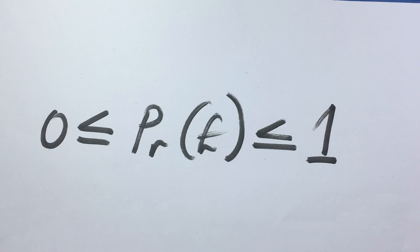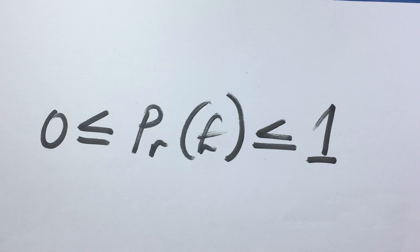In our first lesson on probability, we answered the question: what is the probability of an event? We did that from an empirical perspective and also gave some general definitions. In our second lesson on probability, we answered the question from the set theoretic perspective, giving a set theoretic definition to the probability of an event.